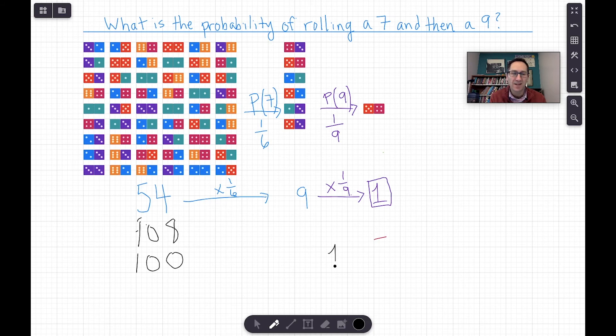Right. And then eventually you can get to the idea that, well, if we just started with one, right, the same thing is going to happen. That's going to be a seven about a sixth of the time. And then that next event, we're trying to roll a nine, which is a ninth of the time. And that's a 54th. Right.